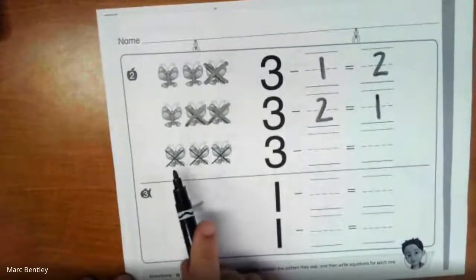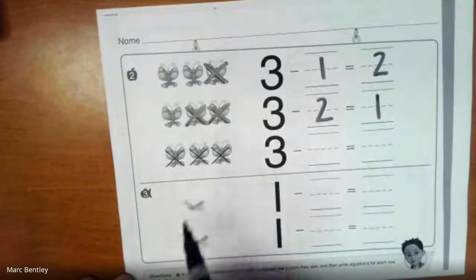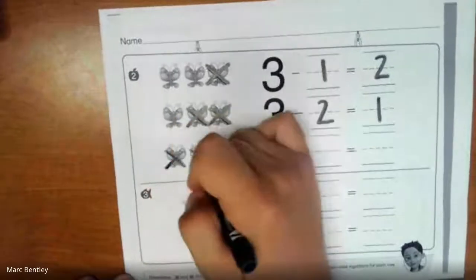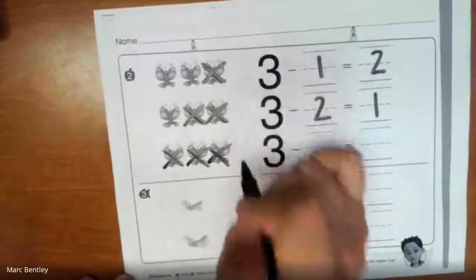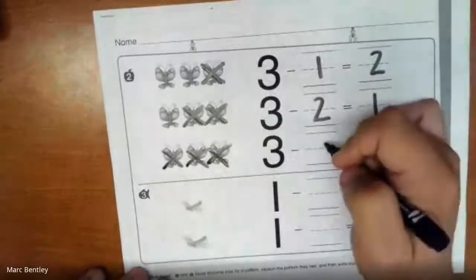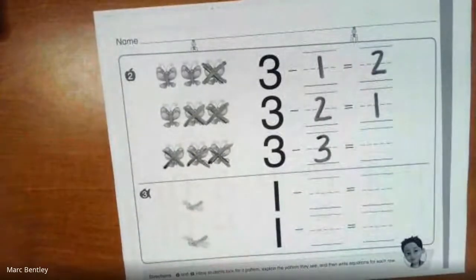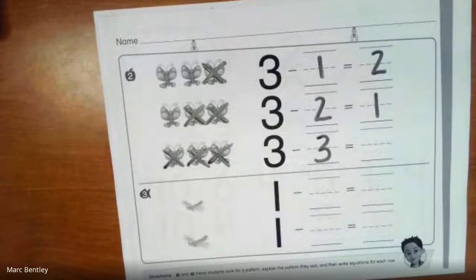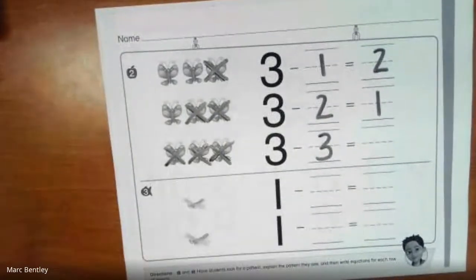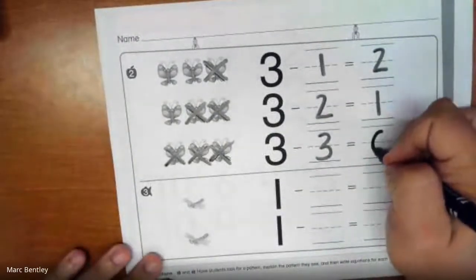The final one. We started with 3, but now we have an x through all 3 of them. So I'm starting with 3. I'm taking away 3. How many do we have left? For this one, all 3 of them flew away. So we have 0.